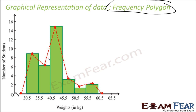Please note: though there exist no classes preceding the lowest class and succeeding the highest class, we have just added two class intervals at zero frequency. This is done to make sure that the frequency polygon has the same area as the histogram.